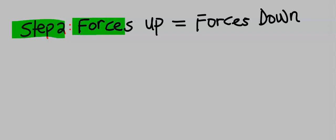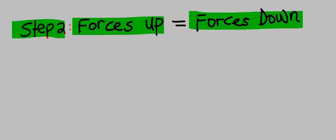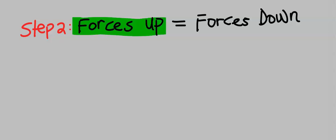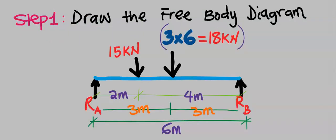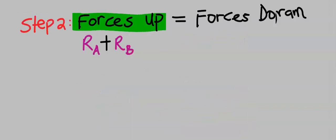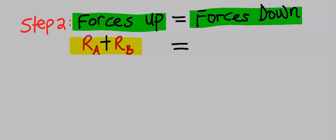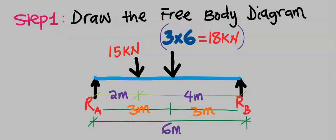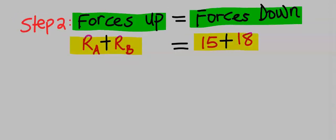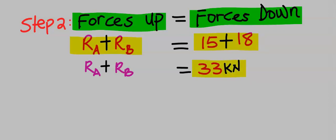Step number two: forces going up are equal to forces coming down on the beam. From the free body diagram, the reaction forces pointing up are R_A and R_B. The forces coming down on the beam are 15 kilonewton and 18 kilonewton. When we add 15 to 18 we get 33 kilonewton total downward force.